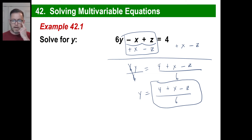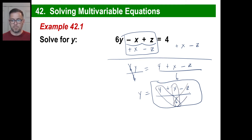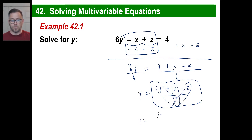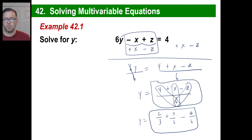By the way, just to let you know — if you divide a series of terms by 6, another way of looking at that is that each one of these is divided by 6 individually: 4 divided by 6, plus x divided by 6, minus z divided by 6. You might see the answer written with a 6 under all three of them, or you might see them individually with a 6 underneath each. Now, 4 divided by 6 reduces to two-thirds. The second term would be x over 6. The third would be negative z over 6. That could be your answer in the back of your book. Pause and copy.